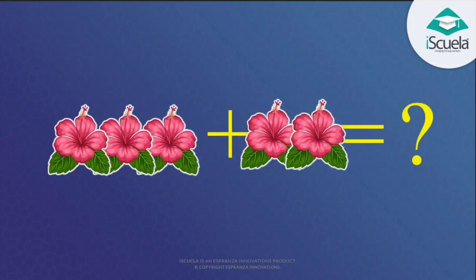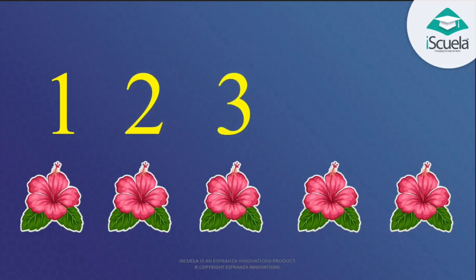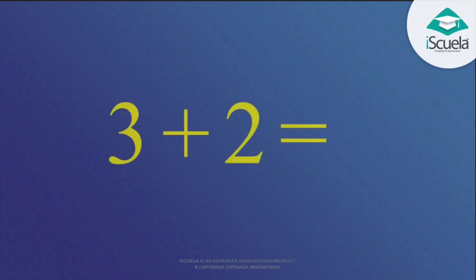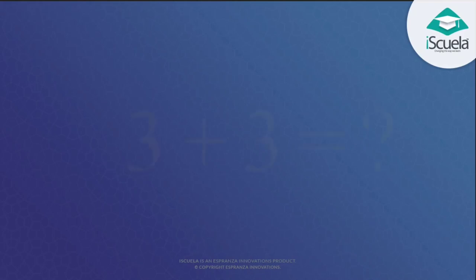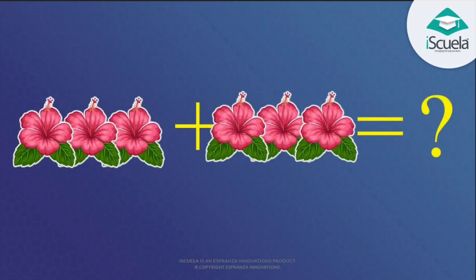Now look at this sum: 3 plus 2 is equal to what? 3 plus 2 — start counting: 1, 2, 3, 4, 5. That means 3 plus 2 is equal to 5. Good!